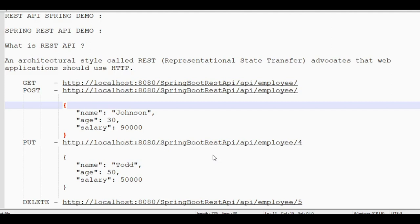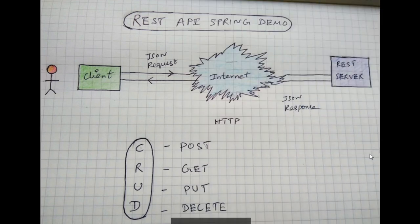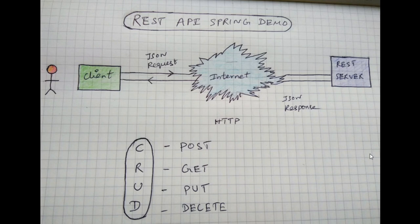The REST API is very lightweight and simple to use. We use HTTP to communicate between two servers. For example, you can use it in a banking application or a booking application. There are many HTTP verbs like GET, PUT, DELETE, and POST.